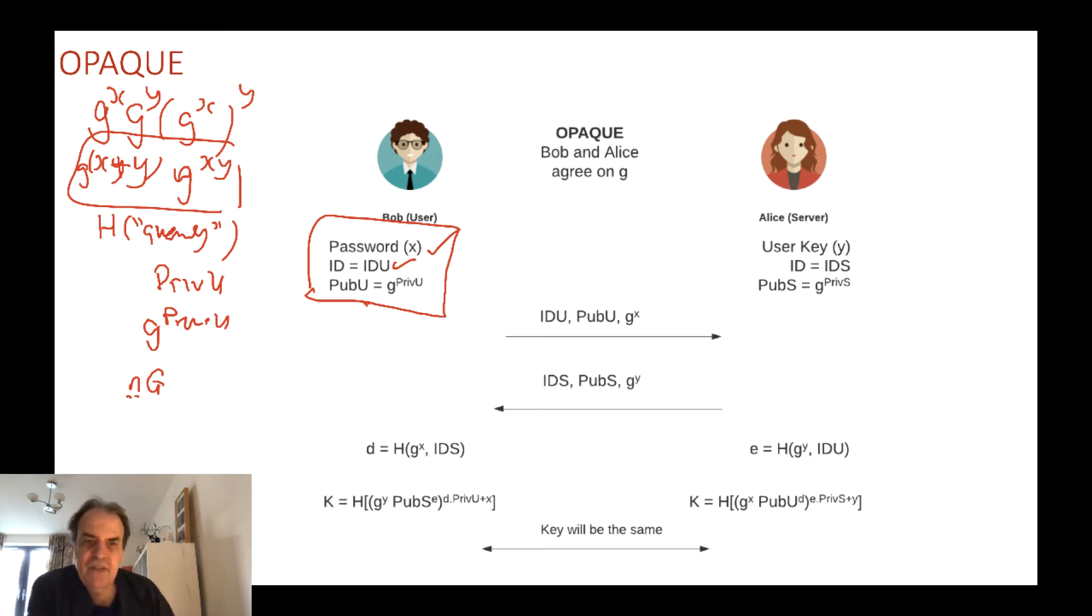All along we will do the mod of P, so it's a prime number also agreed between Bob and Alice, and every operation is done mod P. On the other side Alice will have her user key, this will be the identifier for Bob on her records. She then creates her own server name IDS and then creates a key pair here with her private key and a public key. So this is unique to this session, so every single session she can create a new key for this.